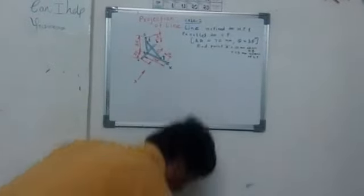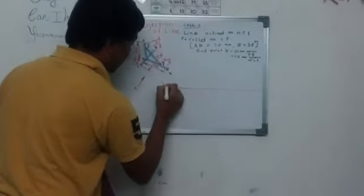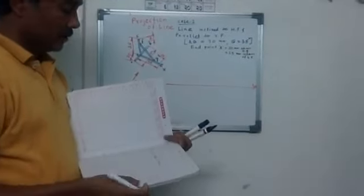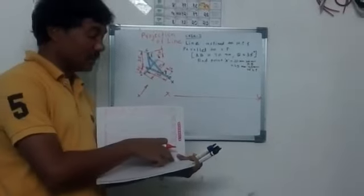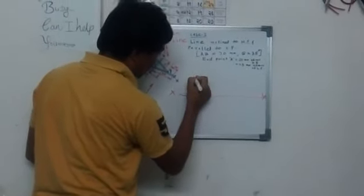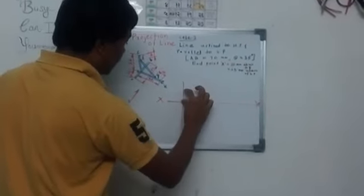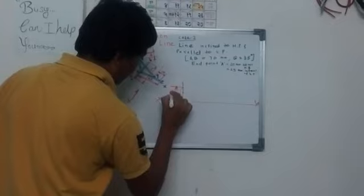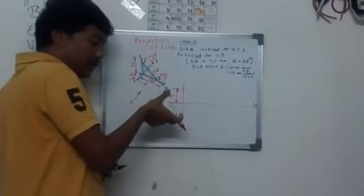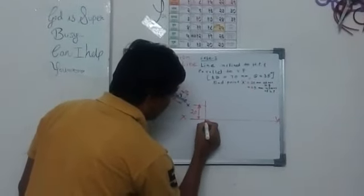Now draw the solution with reference to HP and VP. First, draw the AXY reference line — this is where the vertical plane and the horizontal plane meet each other. Next, draw one vertical line to the left of the AXY line. On this line you will mark 20 millimeters above HP. Take 20 millimeters — this distance above HP will be seen in the front view and appears on the vertical plane.